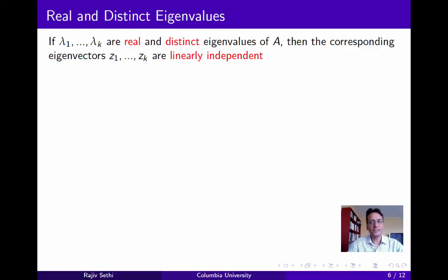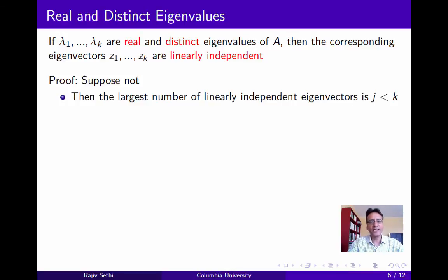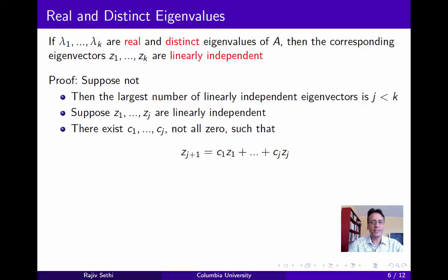We'll show that if you have a set of real and distinct eigenvalues of a matrix A, call them lambda_1 to lambda_k, then the corresponding eigenvectors Z_1 to Z_k are linearly independent. This is extremely useful in transforming A into a simpler form. We'll prove this by contradiction. Suppose lambda_1 to lambda_k are real and distinct eigenvalues, but the corresponding eigenvectors Z_1 to Z_k are not linearly independent. Let the largest number of linearly independent eigenvectors in this set be j, where j is strictly less than k. We can relabel so the first j are linearly independent, and express Z_{j+1} as a linear combination of the first j eigenvectors using real coefficients C_1 to C_j, not all of which are zero.